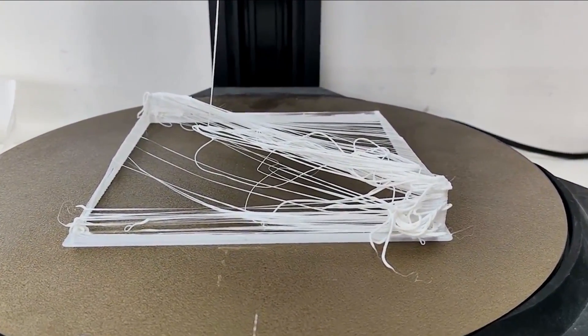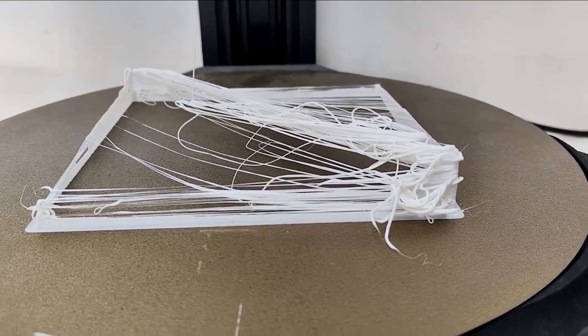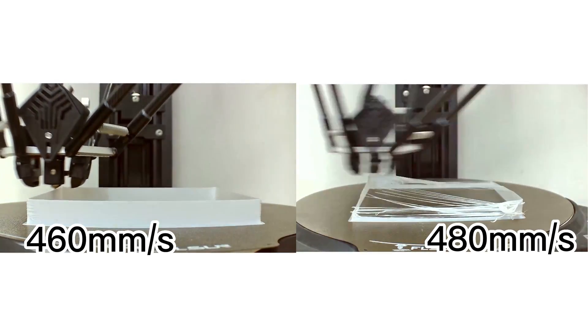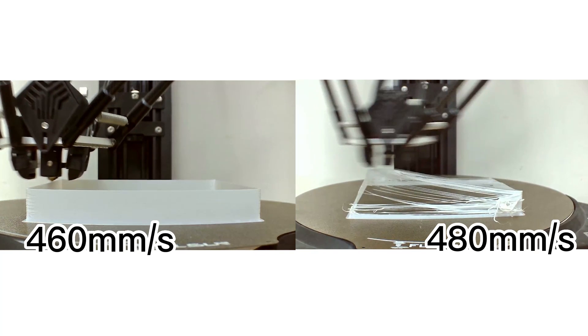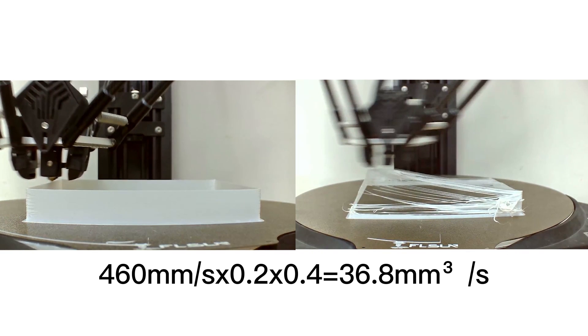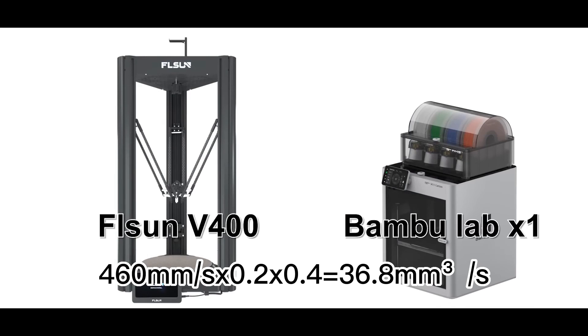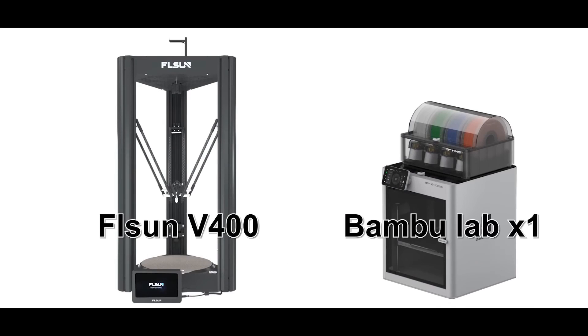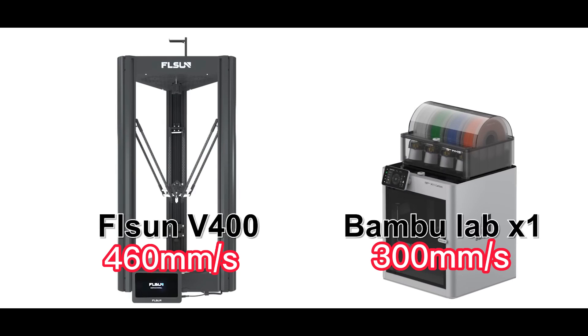We can conclude that the true melting speed of the FLSUN V400 is at around 460 millimeters per second, and the volume flow rate of the V400 is calculated to be around 36.8 millimeters to the third power per second, according to the volume flow formula. As a result of these tests, we can conclude that the Bamboo Lab X1 true melting speed is capped at about 310 millimeters per second, and the FLSUN V400 true melting speed is around 460 millimeters per second.